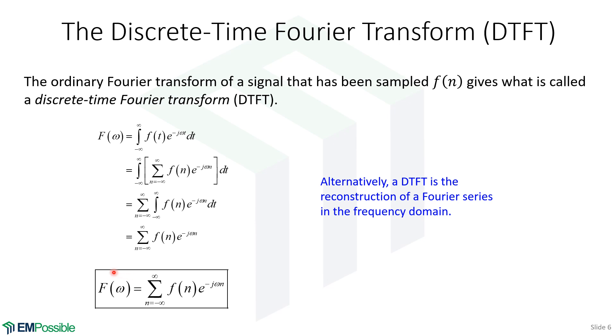And the discrete time Fourier transform is a continuous function, even though the original function is sampled. Alternatively, we can think of the discrete time Fourier transform as a Fourier series of our frequency domain or Fourier domain signal.